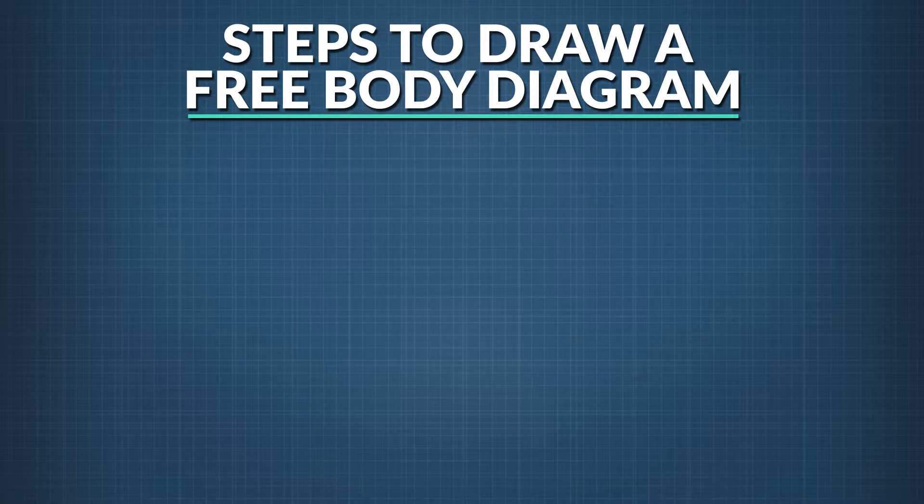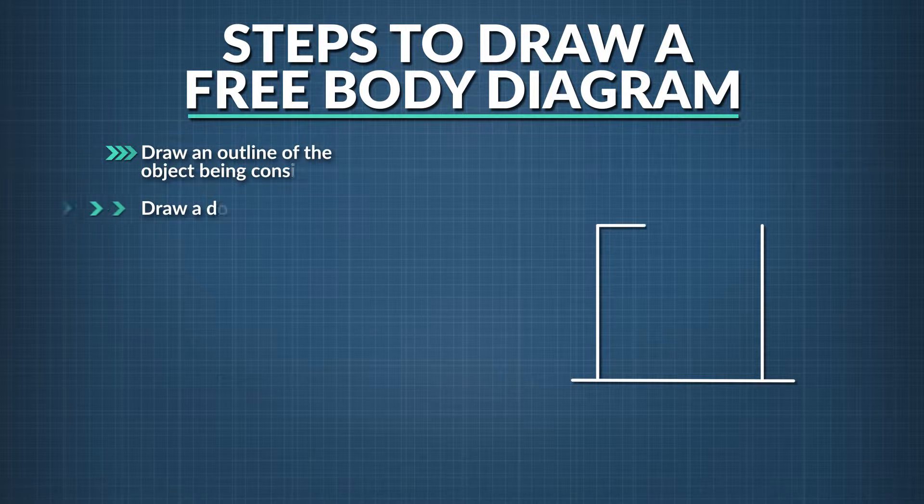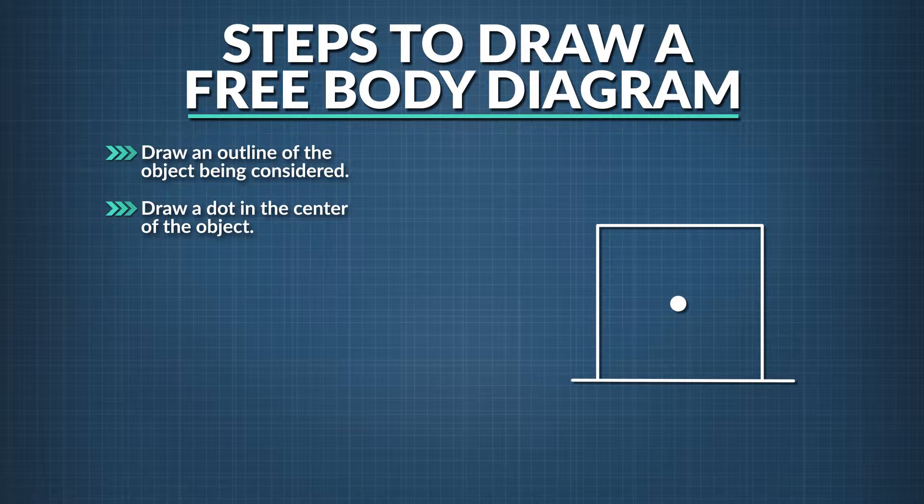Here are the steps to draw a free body diagram. Draw an outline of the object being considered. Draw a dot in the center of the object. All forces in our free body diagrams will start from this dot.